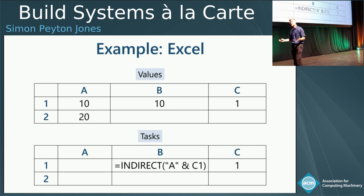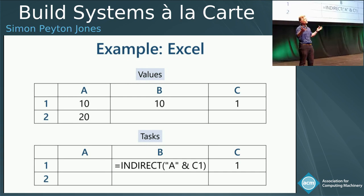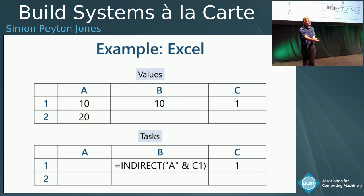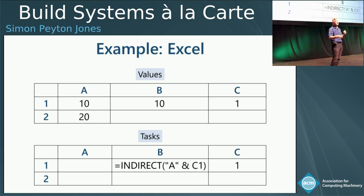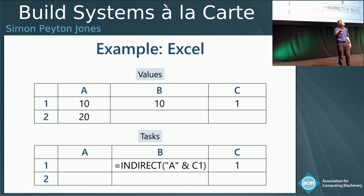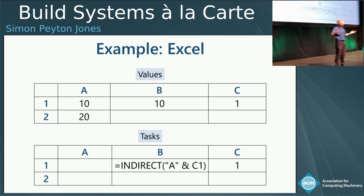Dynamic dependencies are present, for example, in Excel. If you say equals A1 plus A2, it's clear that formula depends on A1 and A2. But Excel has an INDIRECT function — it takes a string and treats it as a cell reference. So the string A ampersand concatenated with C1 makes A1, so it looks up the value of cell A1. If you change the value of C1 to 7, it looks up A7 and so forth. You don't know what the dependencies of this formula are statically — you only know them at runtime or evaluation time.